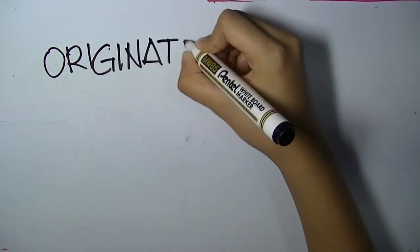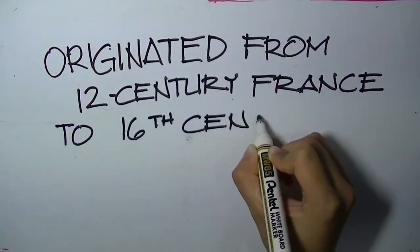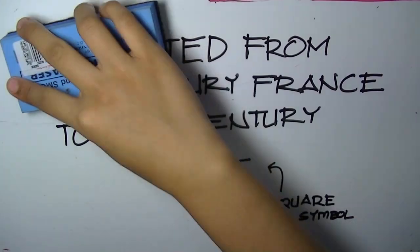The Gothic style of architecture originated from 12th century France to the 16th century, where the modern square root symbol was thought of and created.